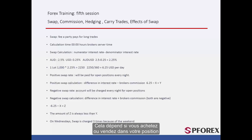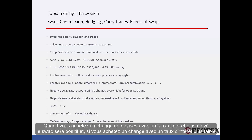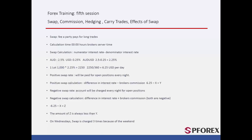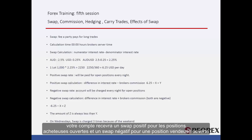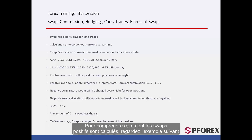This depends on whether you are buying or selling in your position. Whenever you buy an exchange with a higher interest rate, swap will be positive, and if you buy an exchange with a lower interest rate, or sell in Australian dollars versus US dollars, swap will be negative. Since Australian dollars has a higher interest rate, your account will be deposited with a positive swap for an open buying position and a negative swap for an open selling position.